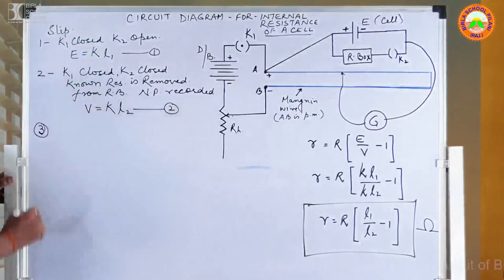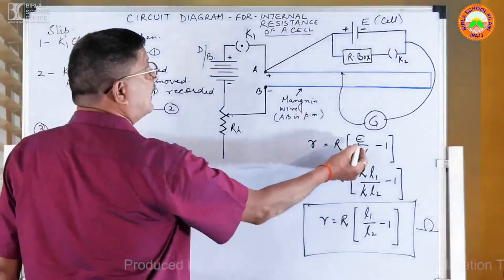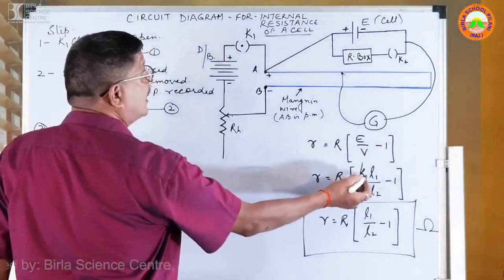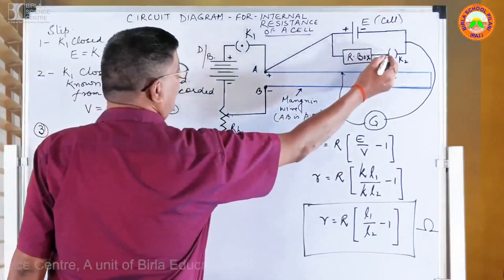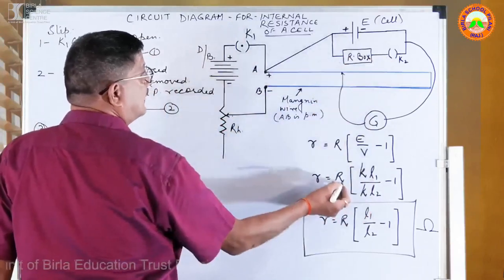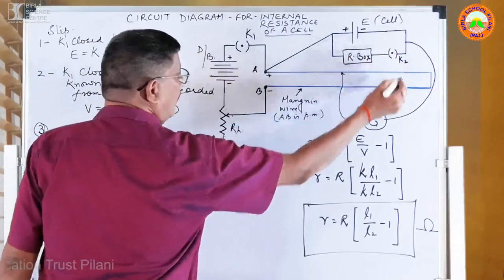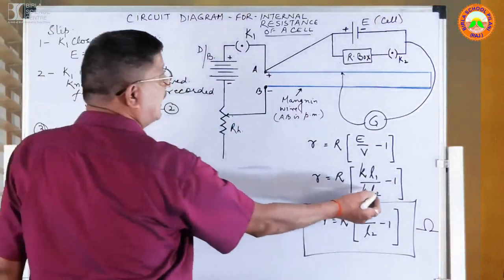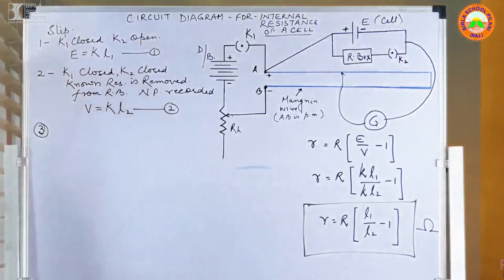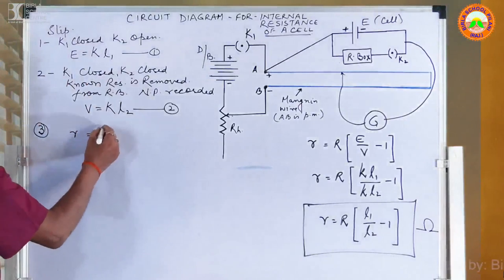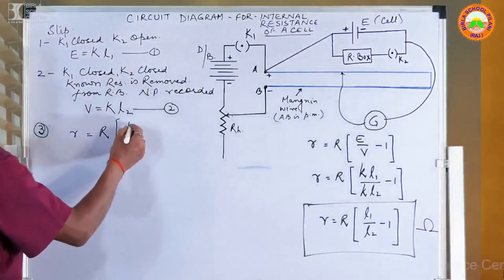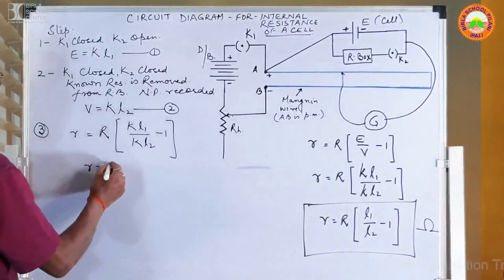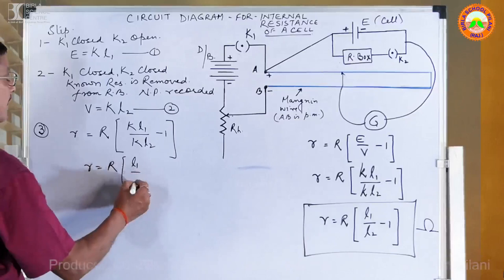To determine the internal resistance of the cell, the formula is: r = R(E/V − 1), where R is the known resistance, E = KL₁ (null point with K2 open), and V = KL₂ (null point with K2 closed). Since K cancels, the formula simplifies to r = R(L₁/L₂ − 1). All factors — R, L₁, and L₂ — are known, allowing us to determine the internal resistance.